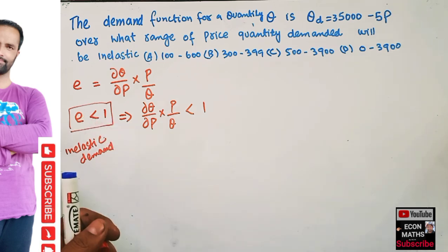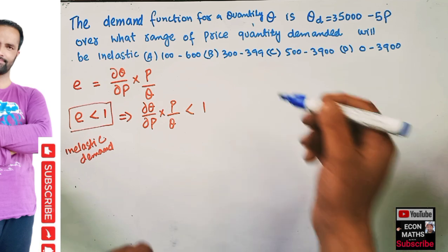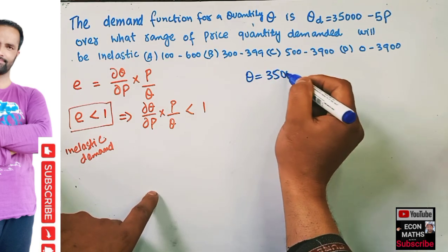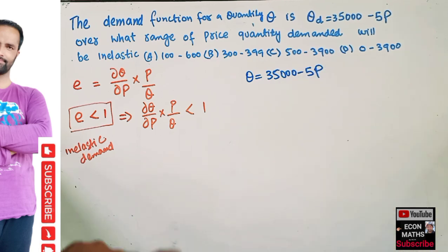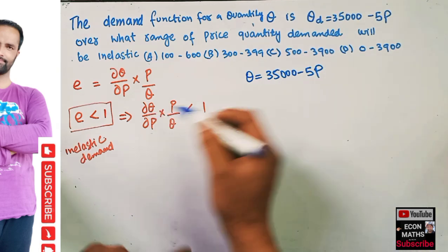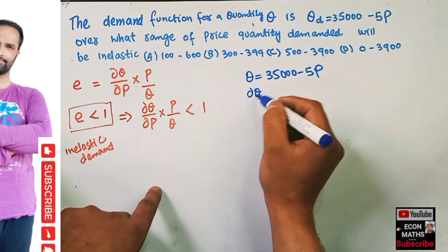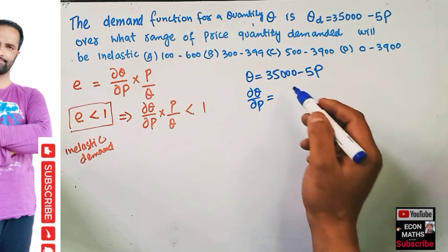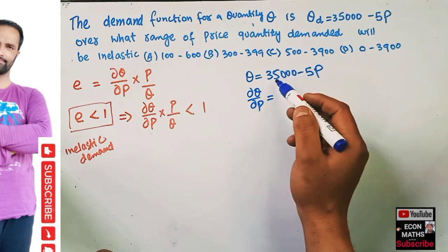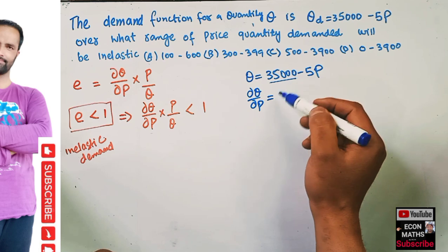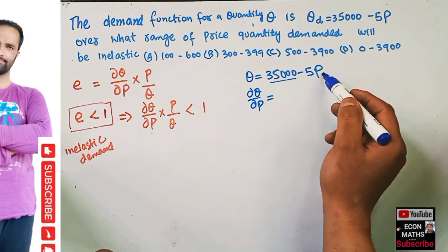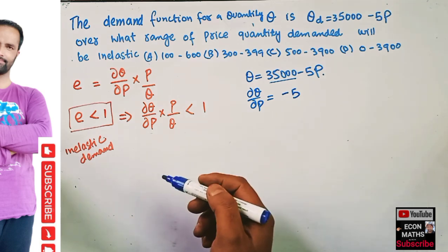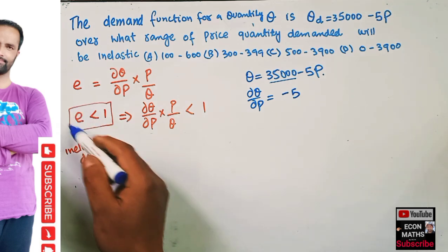Inelastic demand is when our E is less than 1 — by elasticity we mean the absolute value of elasticity. We are given Q equals 35,000 minus 5P. To find dQ/dP: taking the derivative with respect to P, the constant 35,000 gives 0, and the derivative of 5P gives minus 5. So dQ/dP equals minus 5.